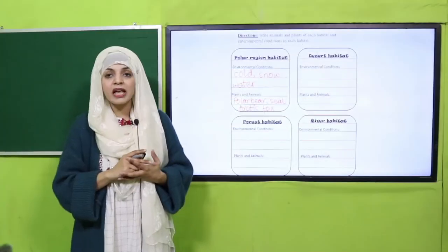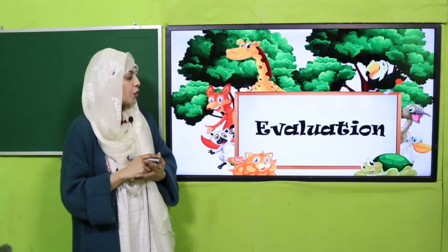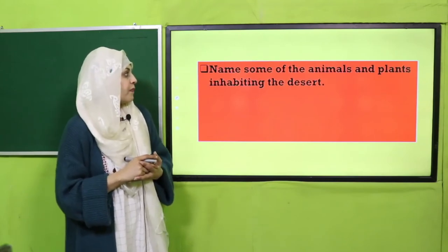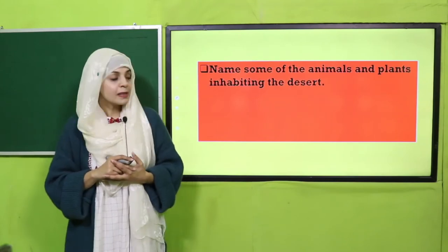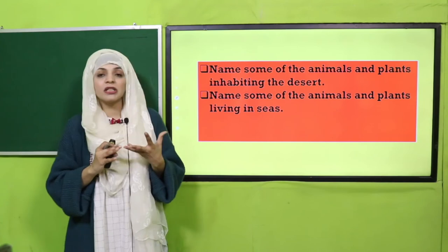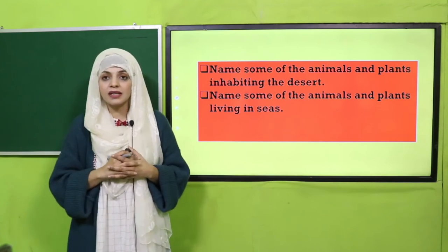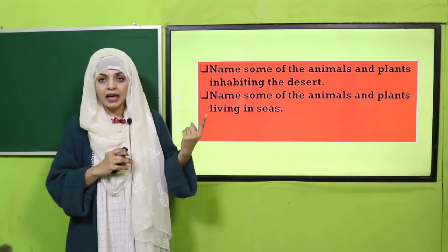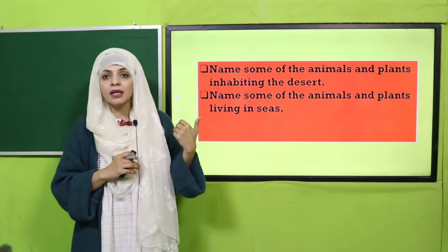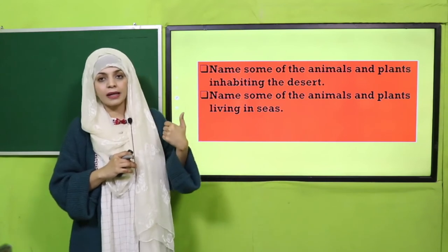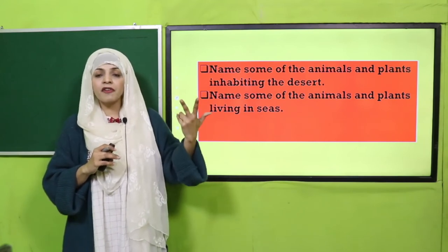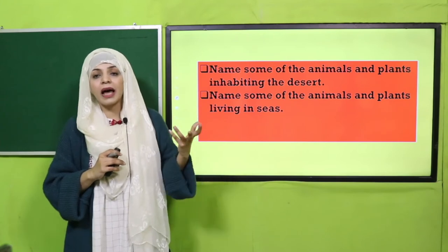I hope all students have completed their worksheets. Now we will move forward towards evaluation. Answer a few questions: name some animals and plants inhabiting the desert. Quickly answer - camels, snakes, kangaroo rats, scorpions. Very nice! And the plants: aloe vera, cactus. Very good!